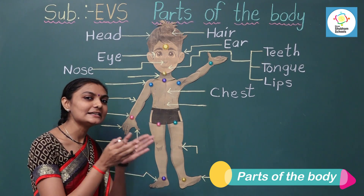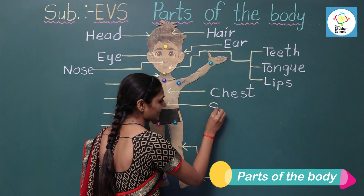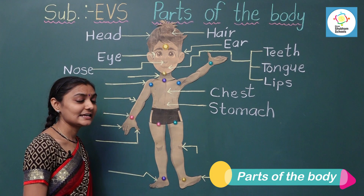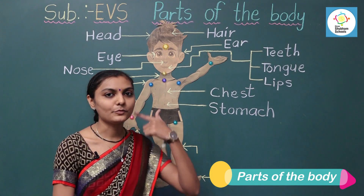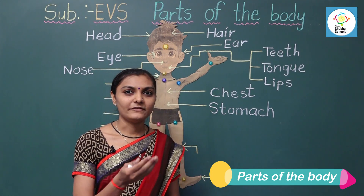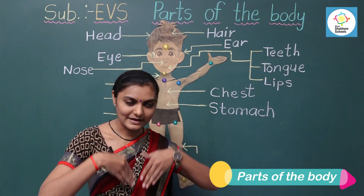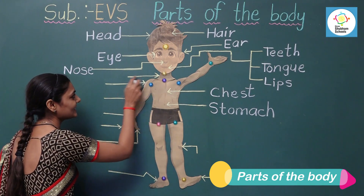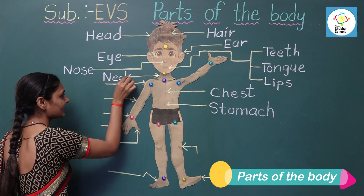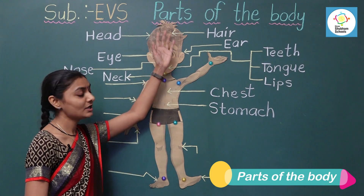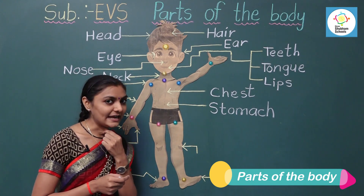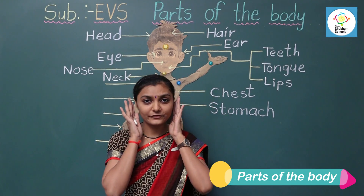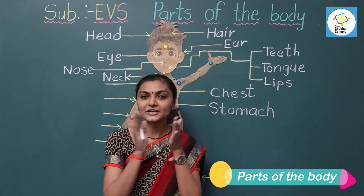Next one is stomach — S-T-O-M-A-C-H. Stomach is located in the middle of our body. When we eat food, it goes to our stomach. There is a part which joins our head and our chest — it is neck — N-E-C-K. Neck joins our face, head and chest together. With the help of neck, we can move side to side and see all things around us. We can move our head in all directions.